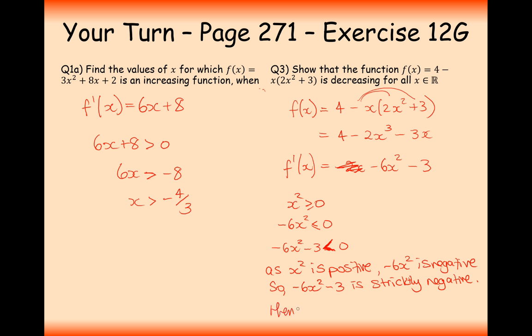Since −6x² − 3 is strictly negative for all real x, the graph is a decreasing function for all values of x in the reals. So that's the answer to this question. Have a go at some questions from Exercise 12G — persevere through those difficult ones and ask a teacher for help. Thanks for watching.